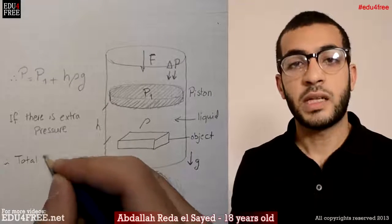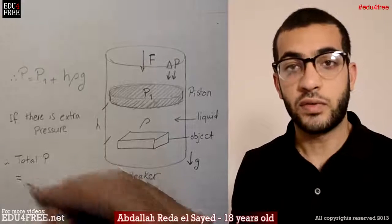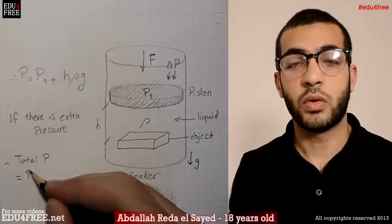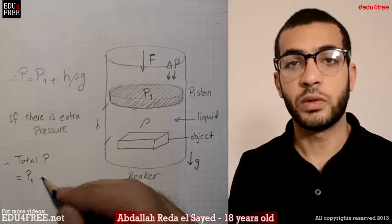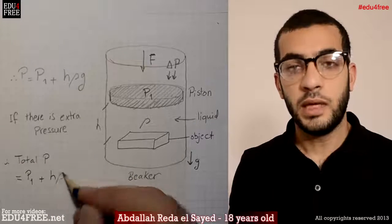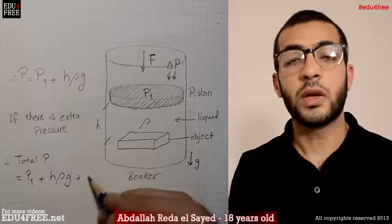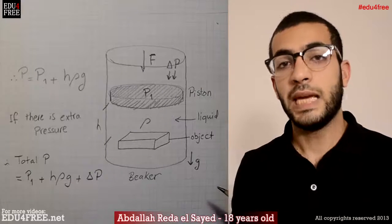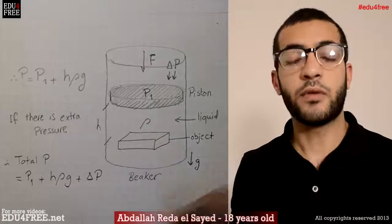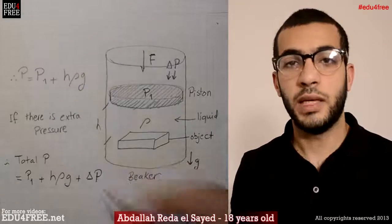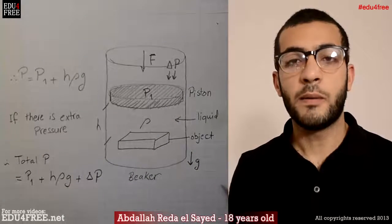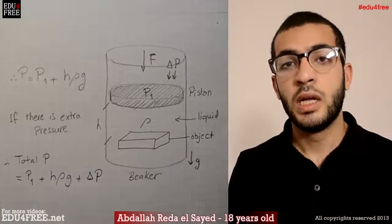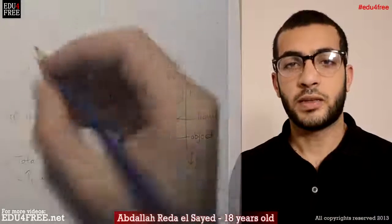By increasing the pressure of the piston, the pressure exerted on the object will be p equals p1 of the piston plus h·rho·g for the liquid plus delta p, and this delta p is for the variation of the pressure exerted over the piston. This is basically Pascal's Principle.